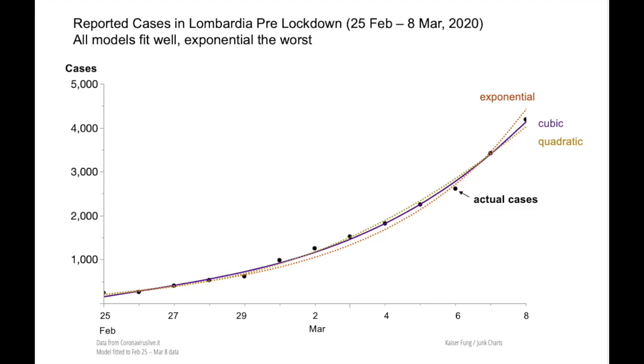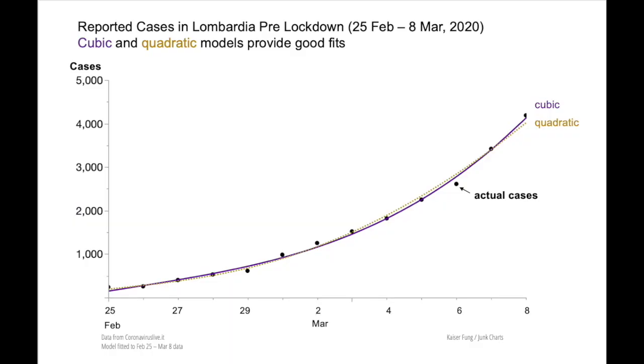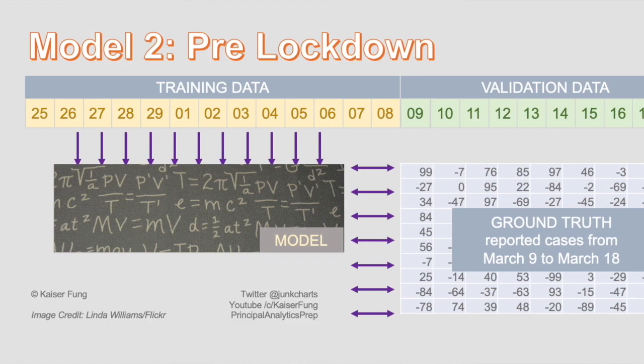The growth curve was never exponential. I now have two sets of models for the growth of cases in Lombardia — one set based on the pre-lockdown data and the other based on the entire dataset up to March 19th. In both cases, the cubic and quadratic growth curves were a better fit than the exponential. For the pre-lockdown model using data up to March 8th, the cubic and the quadratic were very close to each other and it's hard to know which one is better.